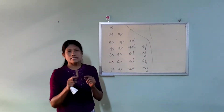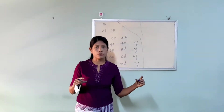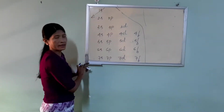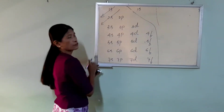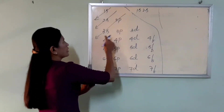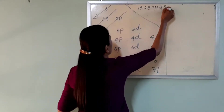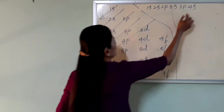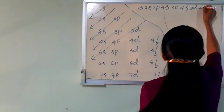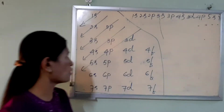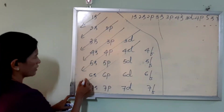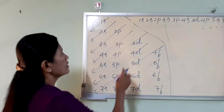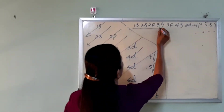The electronic configuration uses 1S. The Aufbau order is: 1S, 2S, 2P, 3S, 3P, 4S. Then 3D comes before 4P, 4B before 5S, and 4D before 5P, 6S.